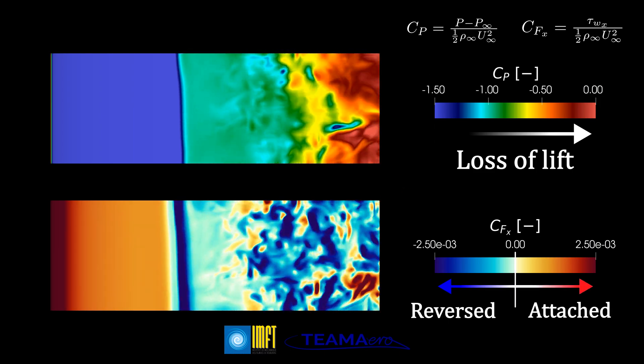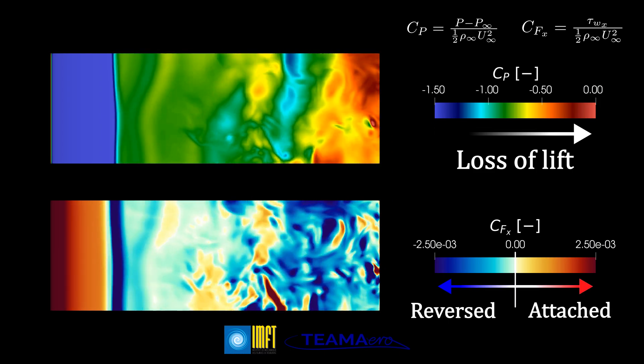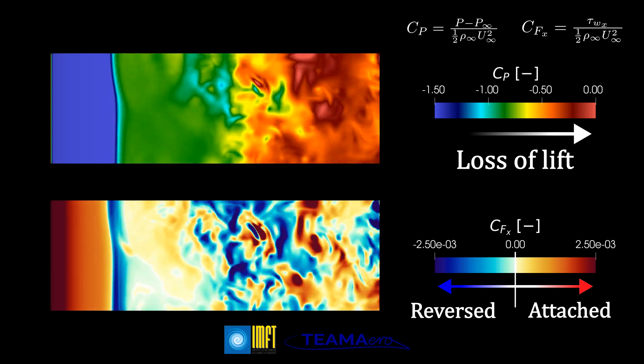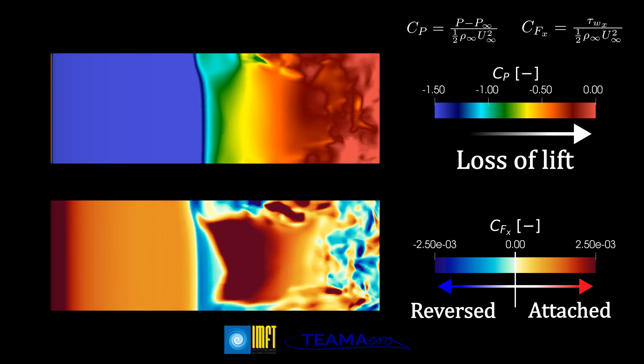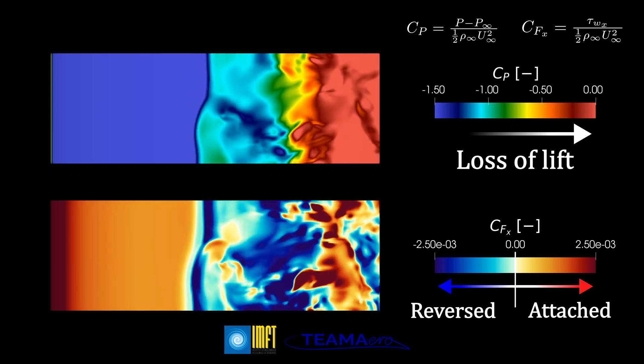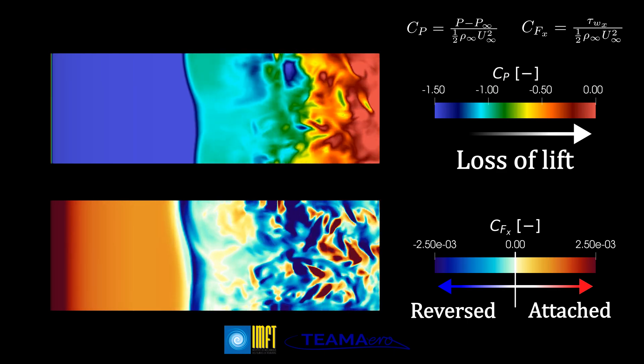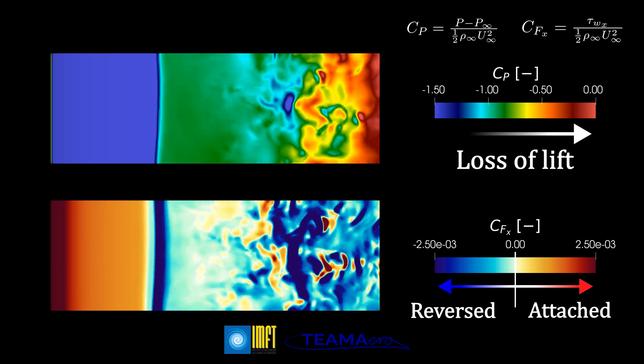On the other hand, the contours of skin friction give us information about the direction and magnitude of the shear forces over the wing surface. Therefore, the detachment location where the flow reverses can be assumed to take place where the skin friction coefficient changes its sign. This occurs when the skin friction coefficient goes to zero.